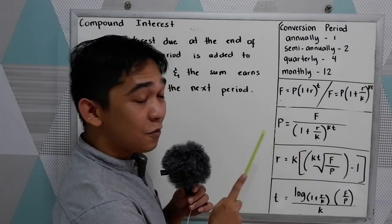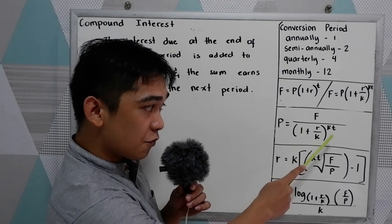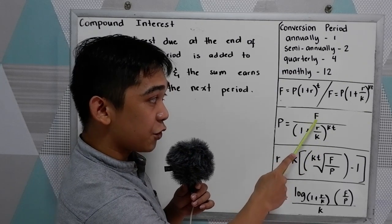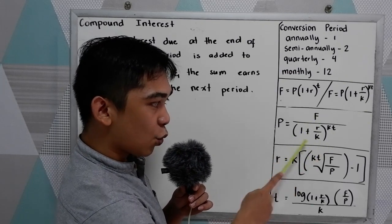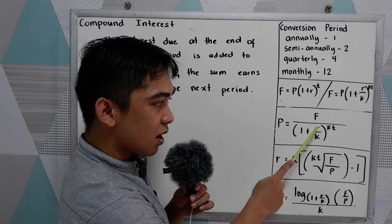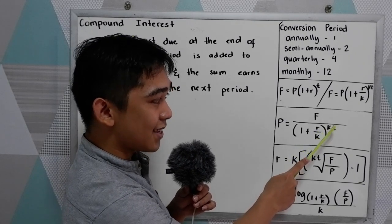And if the unknown is R, we're going to use this formula: F, or the future value, all over quantity 1 plus R over K raised to KT.